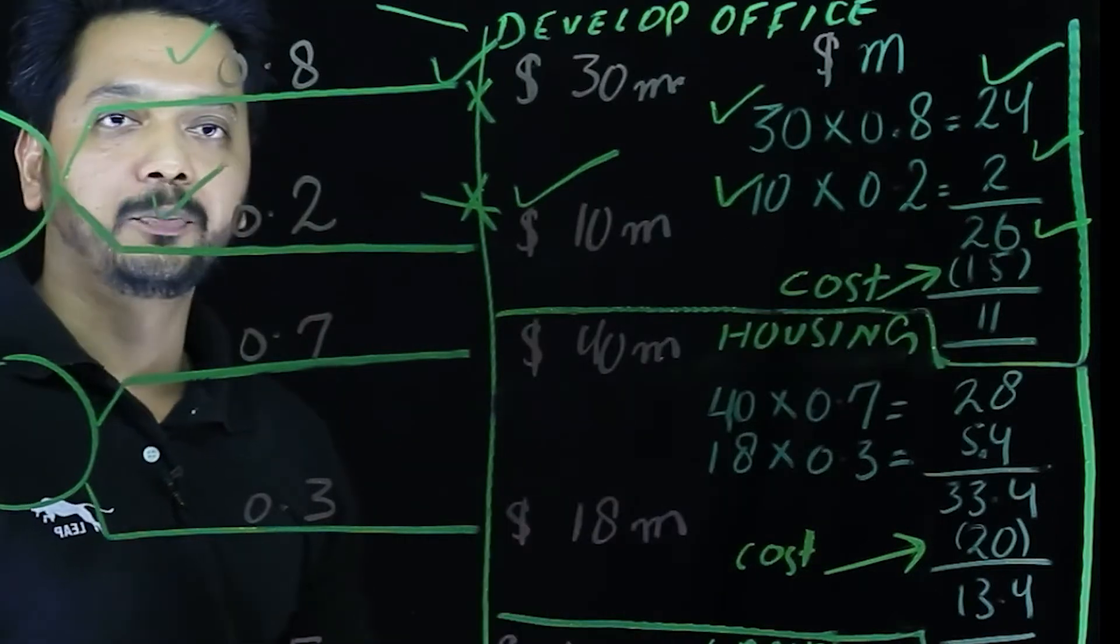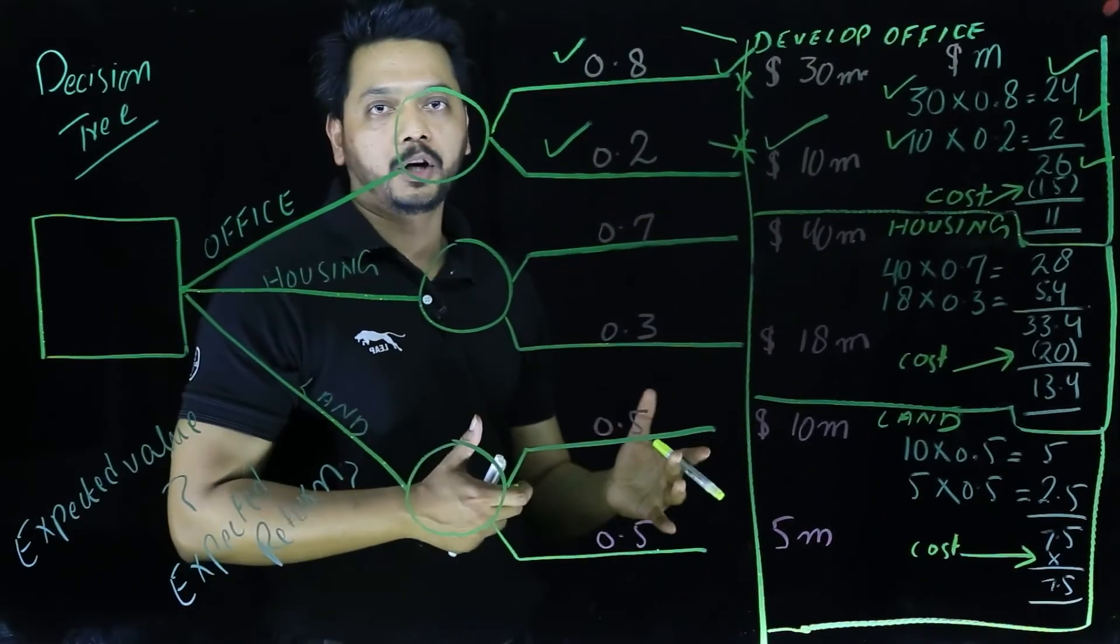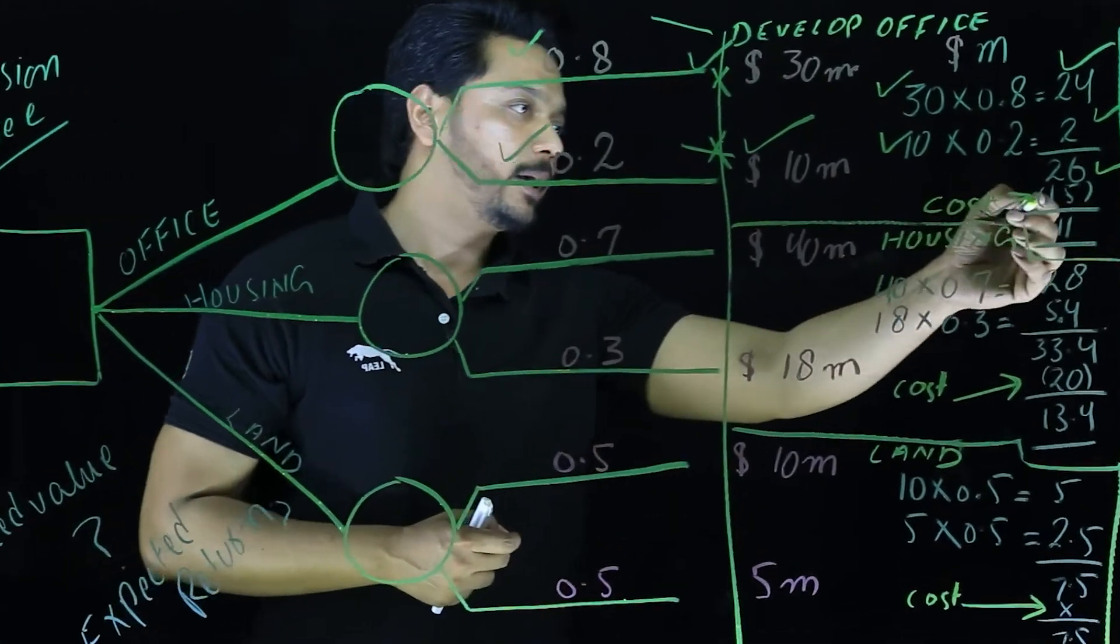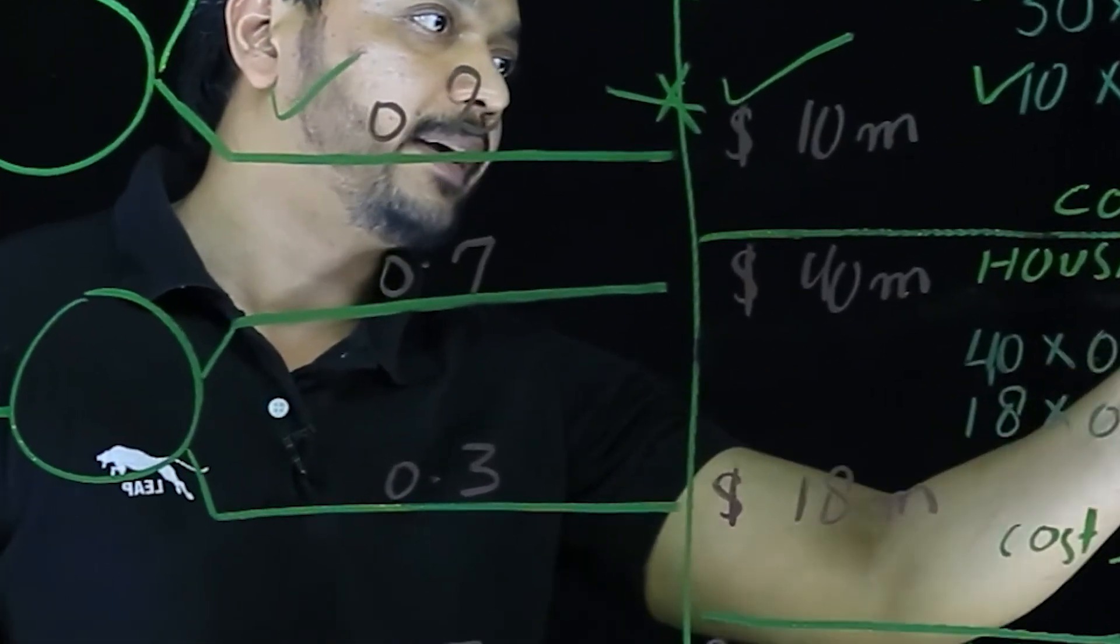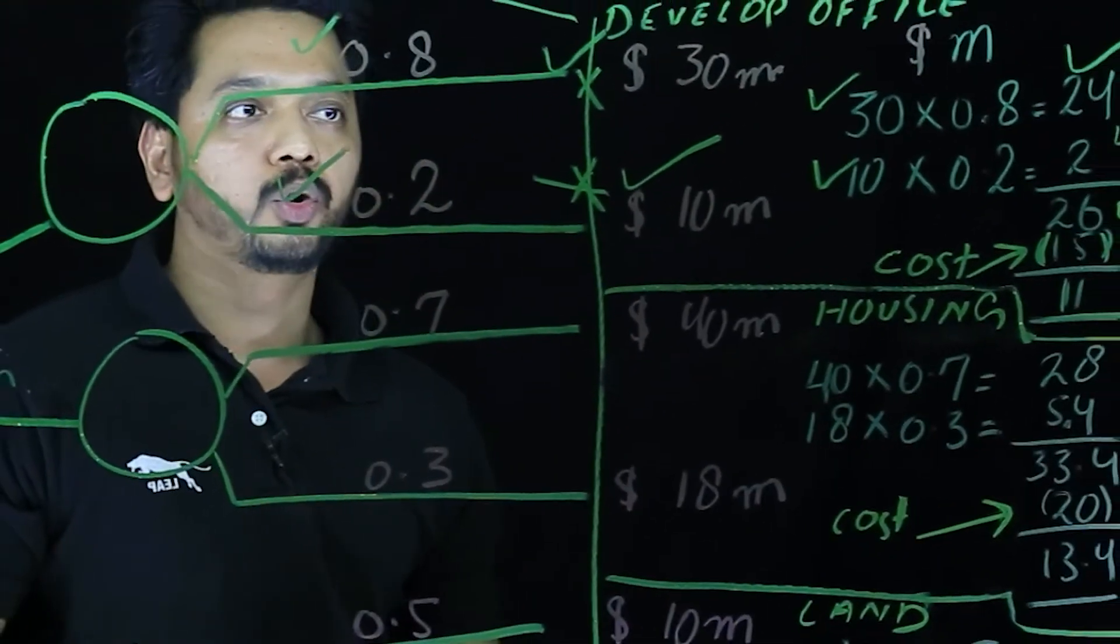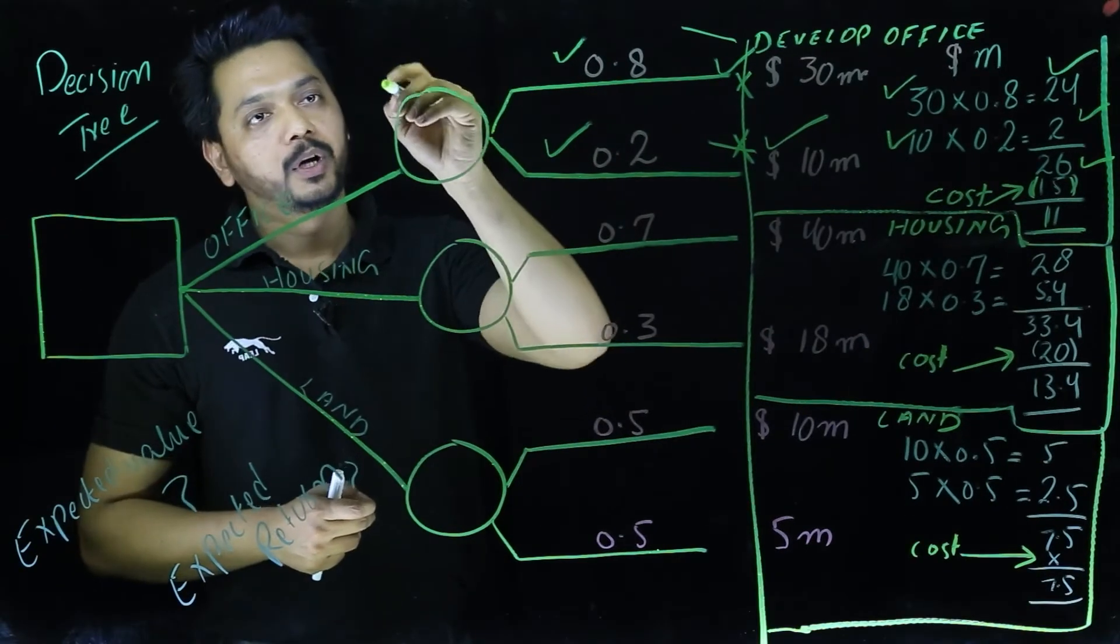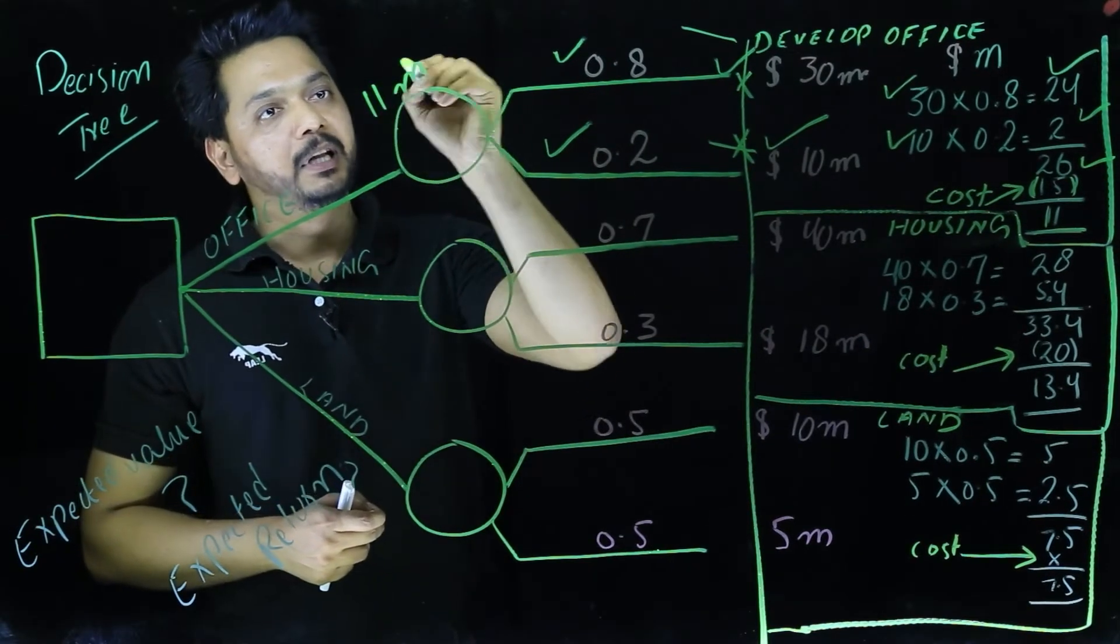Now here it comes $26 million, and the cost, the capital cost which is given here, we'll deduct the capital cost going to be invested here, which will give them a sum of $11 million here. So we could say that this option number one would give them $11 million.